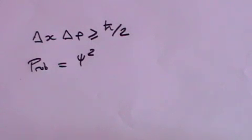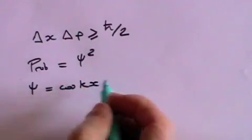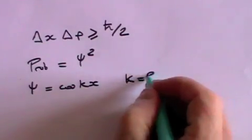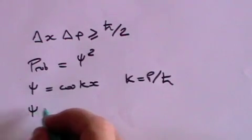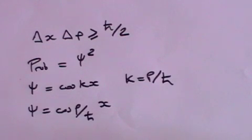If we consider psi equals cosine kx, then since k equals p over ℏ, psi equals cosine p over ℏ times x. But this implies that we know both p and x, that's momentum and position, precisely, and Heisenberg's principle says that we cannot do that. If we know p precisely, then we cannot know x at all.